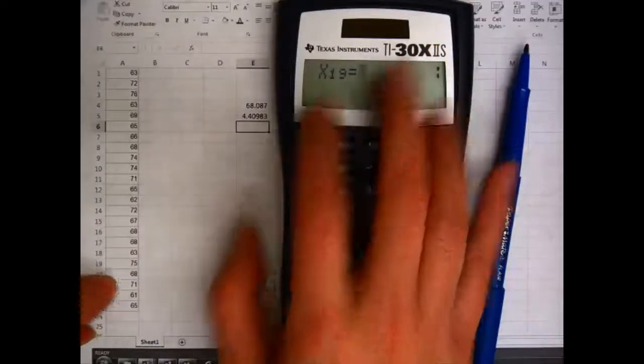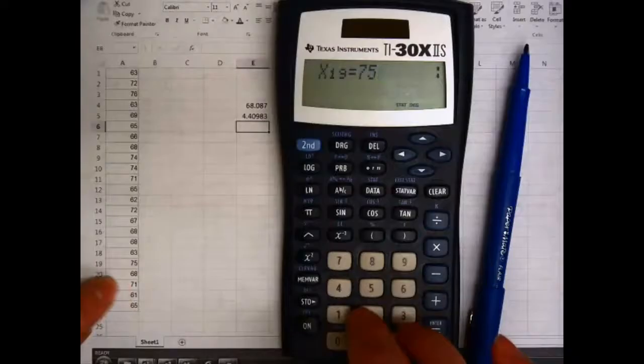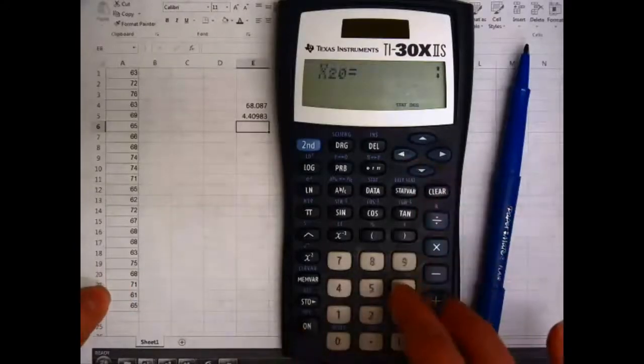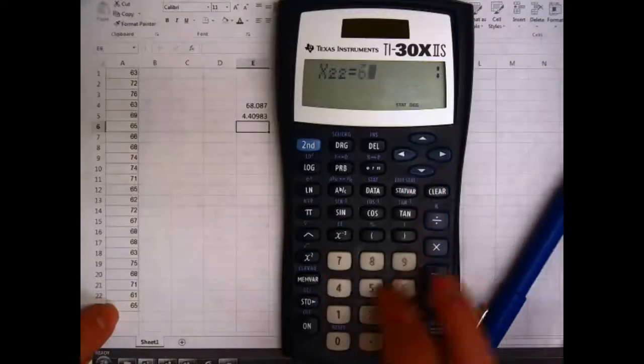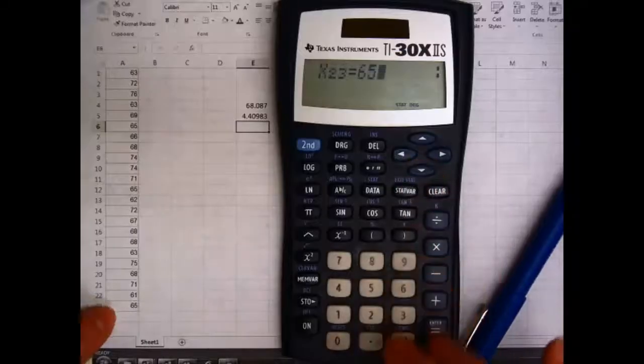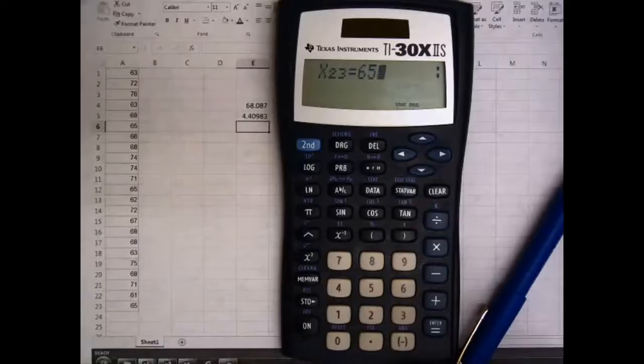Also, the little subscript of 19 tells me that I'm right on track because Excel told me this was value 19. So now I've got all my values entered.